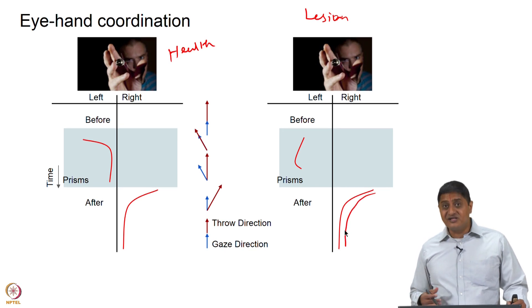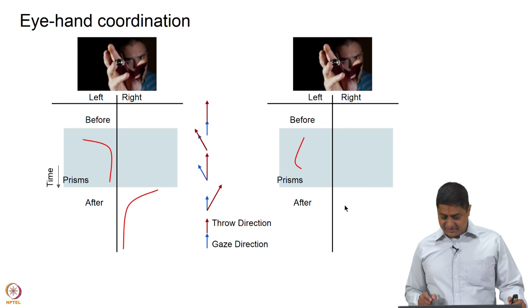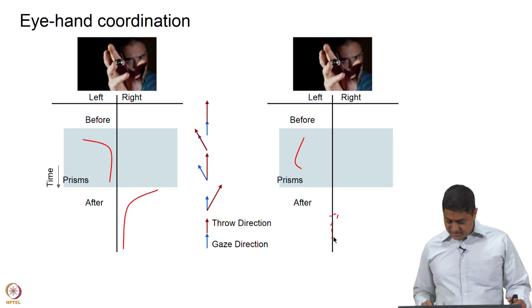Actually if you have a lesion there will be no adaptation, but the picture shows as if there is adaptation and that is a mistake. The correct picture must look like this - there will just be some data here and there, there will be no adaptation.